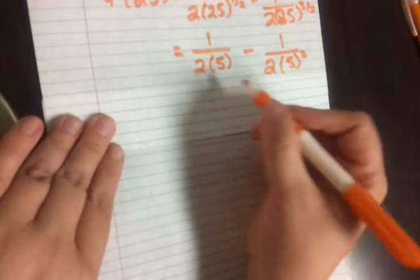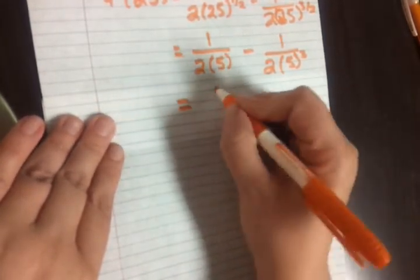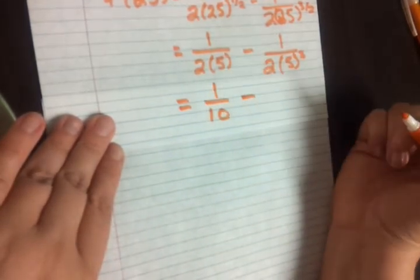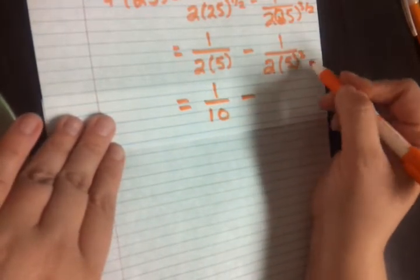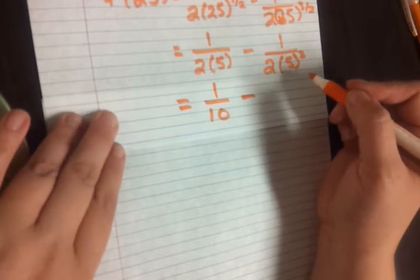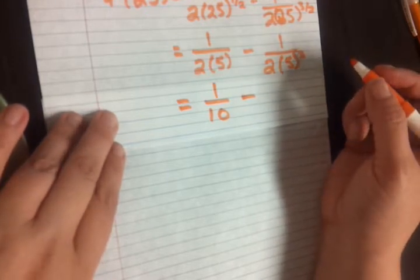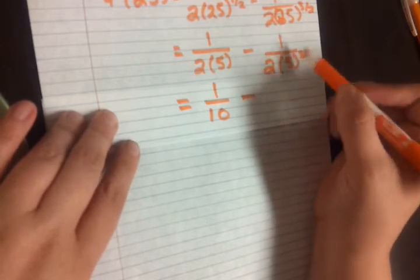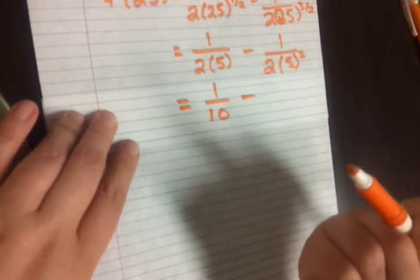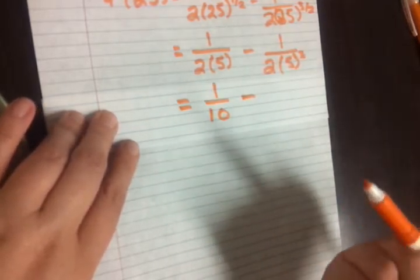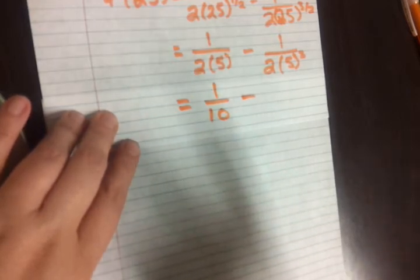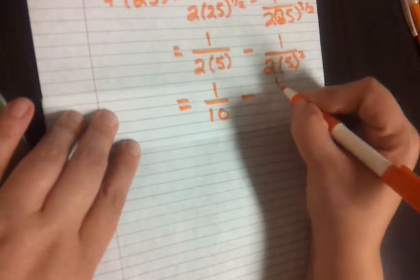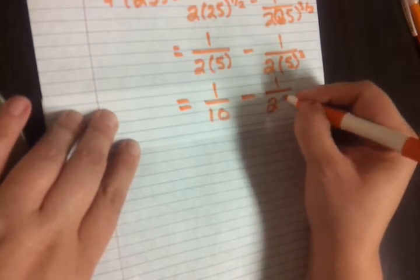So I have 1 over 2 times 5, that's 1/10. 1 over 2 times 5 to the third. Feel free at this point to plug it into your calculator. It's absolutely okay to do that. Or you could try to do it in your head if you wanted to. 5 to the third power, let's see, 5 squared is 25, and then times 5 again is going to be 125. So 2 times 125 gives us 1/250.